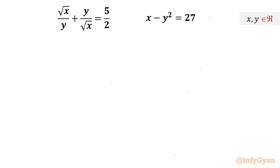Welcome back to Infigyan friends. Today in this video we are going to take up one very interesting and challenging system of equations. The equations are: root x over y plus y over root x equal to 5 over 2, and x minus y square equal to 27. We have to find out real solutions.